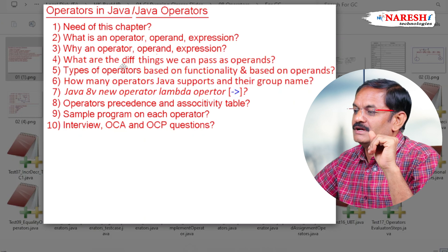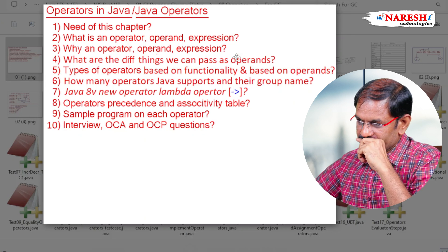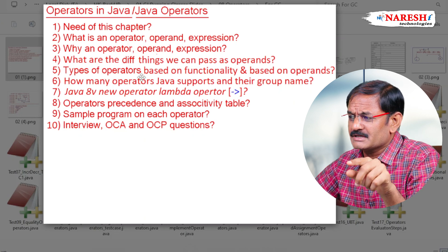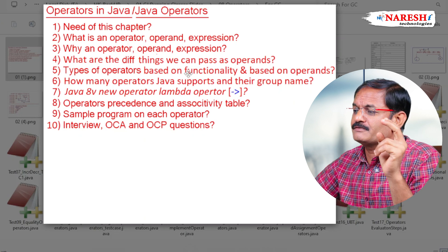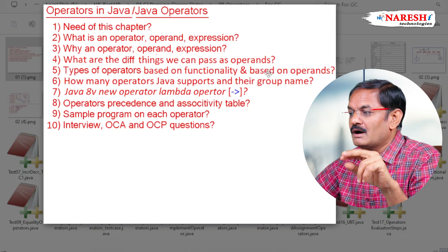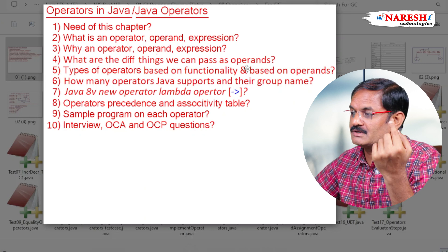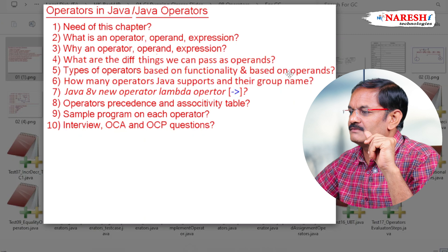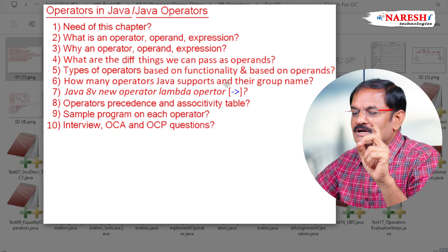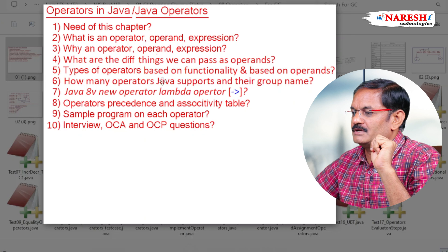Then we have to go for different things we can pass as an operand, followed by types of operators. We have types of operators based on functionality and based on operands — each forming a separate group. Also, how many operators Java supports and their group names — Java supports 40 operators.